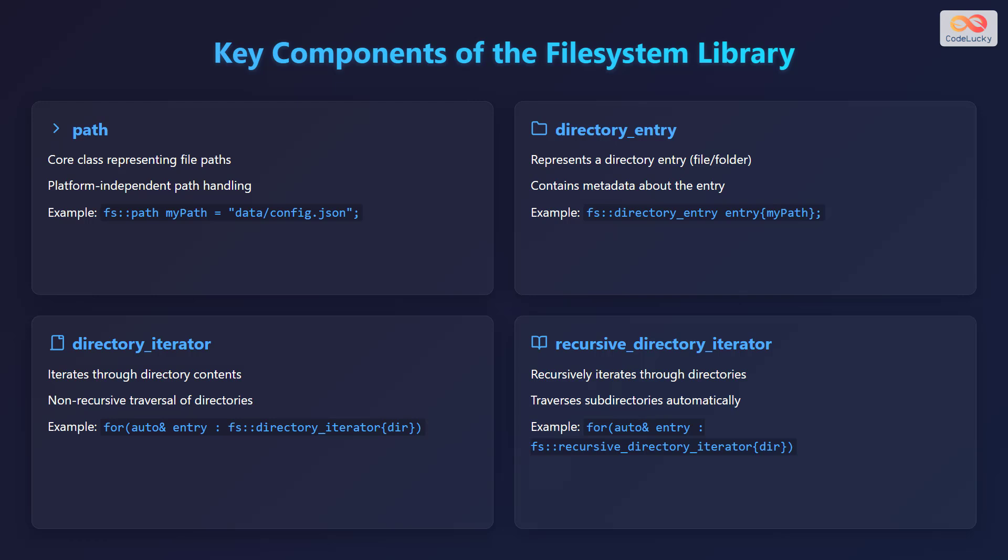The third component is directory_iterator, used to iterate through directory contents in a non-recursive manner. For example, a for loop: for (auto& entry : fs::directory_iterator{dir}). The fourth component is recursive_directory_iterator, which iterates through directory contents recursively.